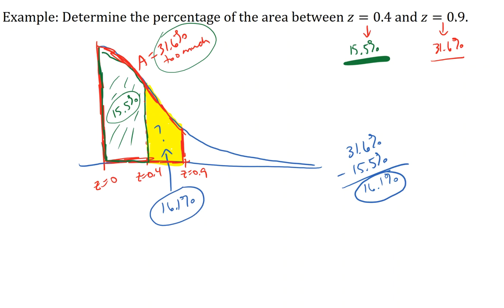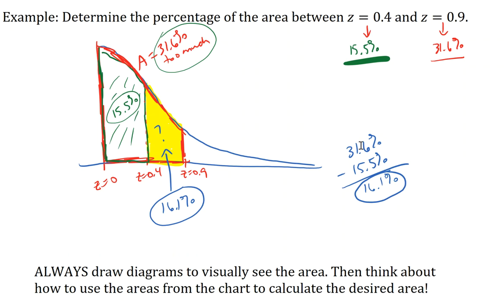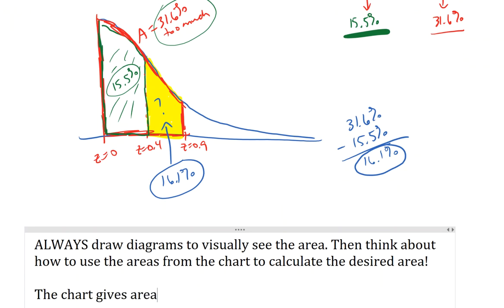So you really have to draw your diagrams to figure out which area you want to find and how to use arithmetic to calculate that area from the areas in the chart. So always draw diagrams to visually see the area. Then think about how to use the areas from the chart to calculate the desired area. And that's all there is to using the chart. Make sure that you understand the chart gives you areas to the mean. So the chart only gives areas measured to the mean. Keep that in mind as you work problems related to this concept.